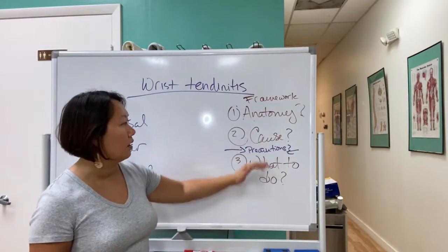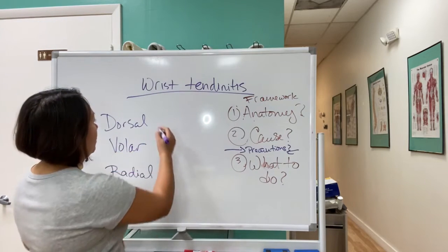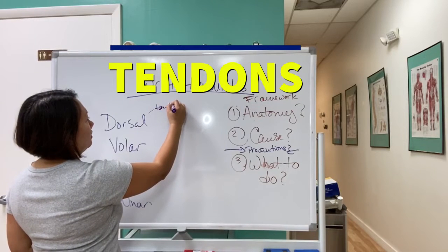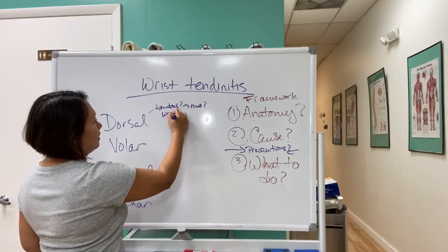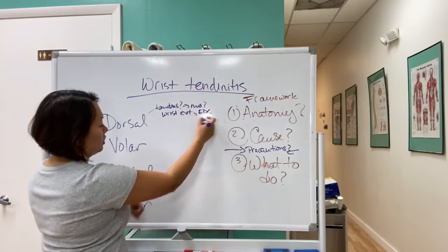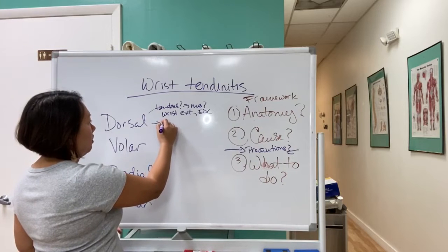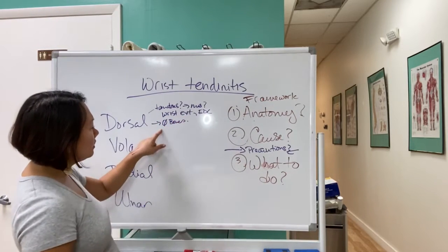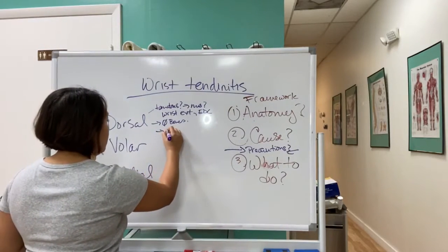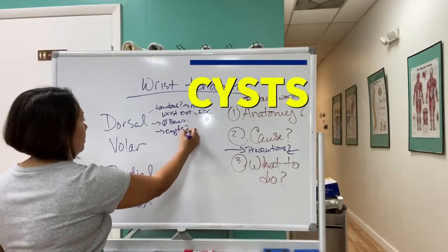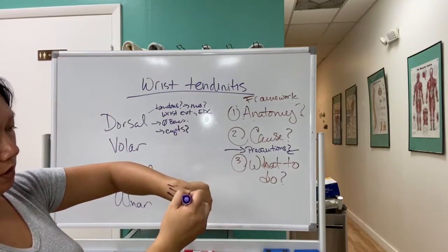So applying this framework to the dorsal wrist: what tendons are passing through? We have the wrist extensor muscles and potentially the EDC — the finger extensors that cross through. We know there are no broken bones, so bones aren't an issue. We could also potentially be looking for cysts on the dorsal wrist aspect.